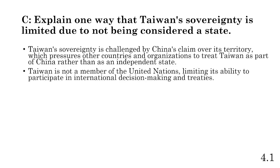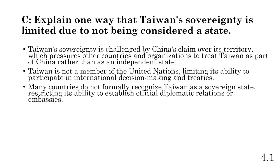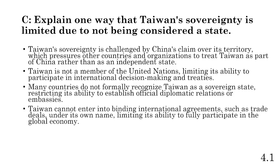Taiwan is not a member of the UN, which limits its ability to participate in international decision-making and invoke treaties, since treaties are between countries. Many countries don't recognize Taiwan as a sovereign state, which restricts their ability to enter diplomatic relationships or form embassies. They also can't enter binding international agreements such as trade deals or economic negotiations, limiting their participation in the global economy.